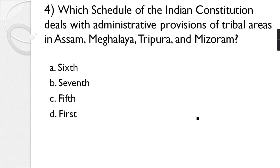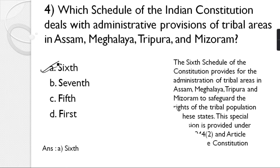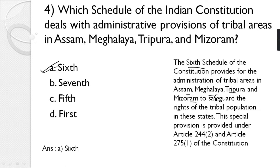Question number 4: Which schedule of the Indian Constitution deals with the administrative provisions of tribal areas in Assam, Meghalaya, Tripura, and Mizoram? Options: 6th, 7th, 5th, 1st. The correct answer is option A — the 6th Schedule. The 6th Schedule of the Constitution provides for the administration of tribal areas in Assam, Meghalaya, Tripura, and Mizoram, under Article 244(2).